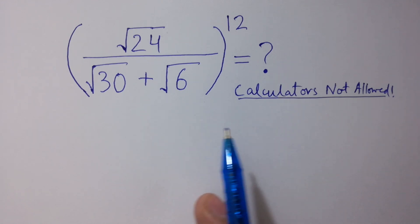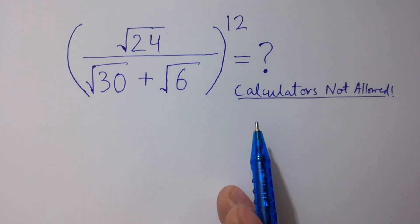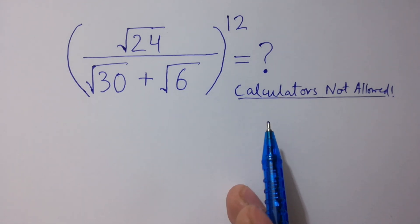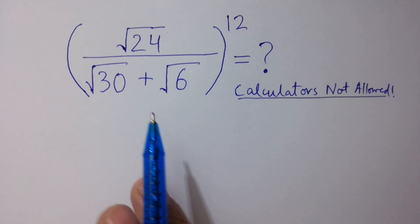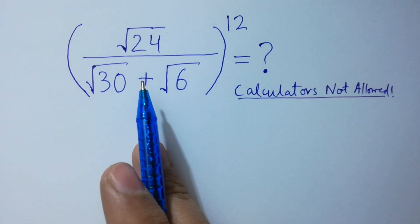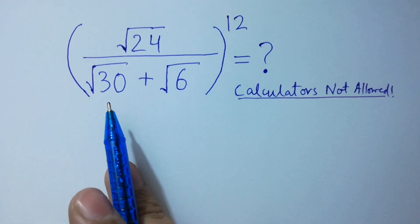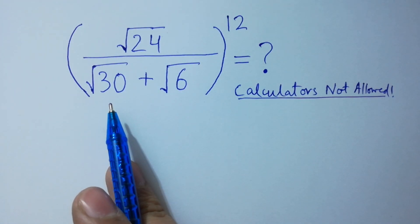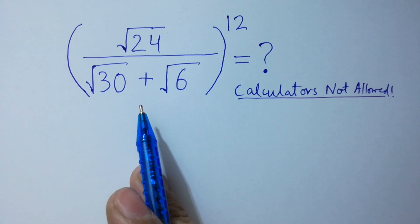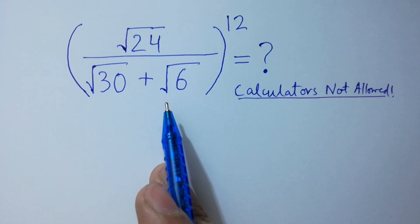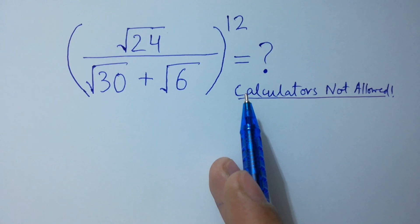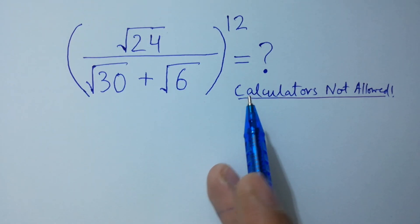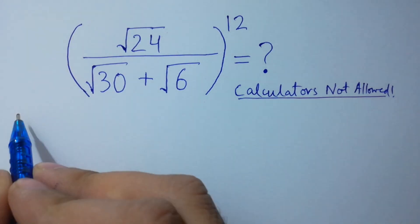Hello friends, calculators are not allowed. We need to find: square root of 24 over square root of 30 plus square root of 6, to the whole power 12. Let's have a solution.